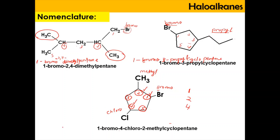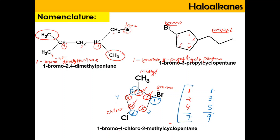We cannot number in the other direction because that would give locants of 1, 3, and 5, with a total sum of 9. The anti-clockwise direction gives a sum of 7, which is lower. That is why we use the anti-clockwise numbering — it follows the rule of the lowest set of locants.